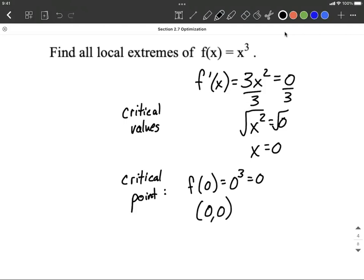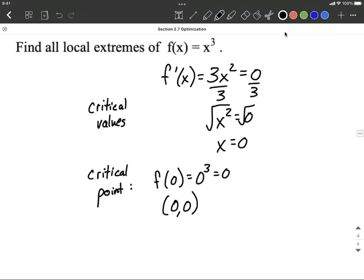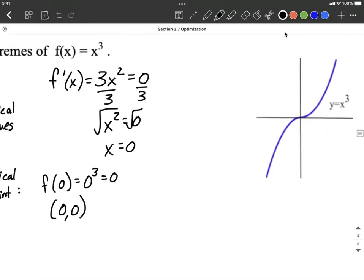Now this is the only place on this graph, because it's the only critical value, where we could have a local maximum or a local minimum. Now it works out that it doesn't turn out being either one of those in this case. As you'll recall, that's what our graph of x³ looks like, an odd power function.